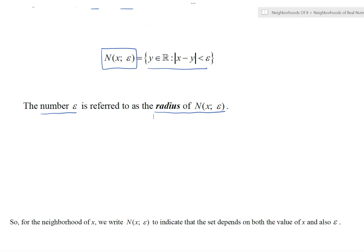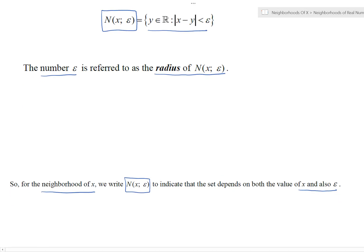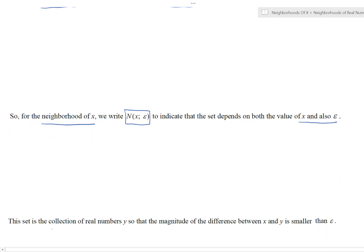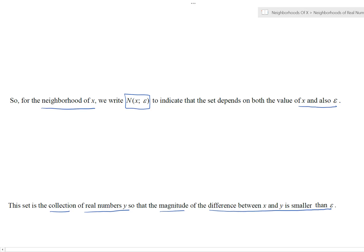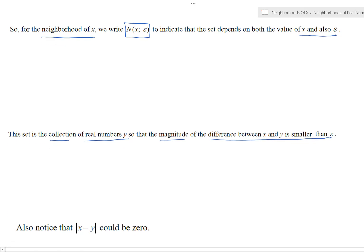Let's dissect this a bit more. The neighborhood of x depends on both x and epsilon, and gives us a collection of real numbers y such that the magnitude of x minus y is smaller than epsilon. We also note that this magnitude could be zero, because if the magnitude of x minus y is zero, it's still less than the positive number epsilon.